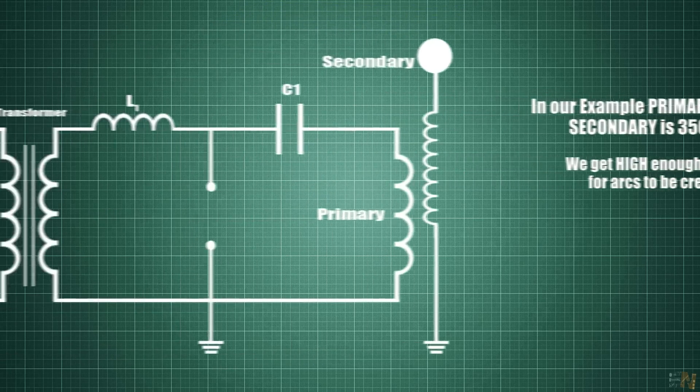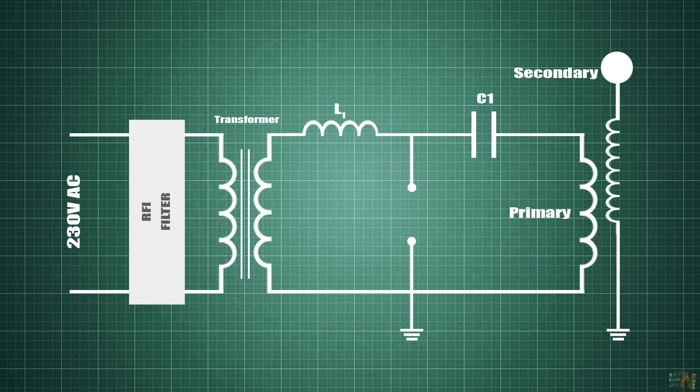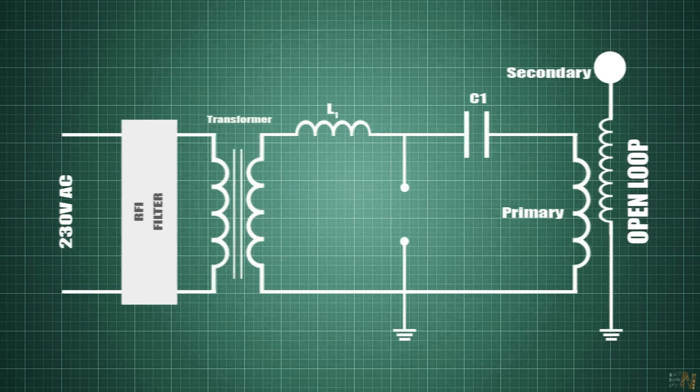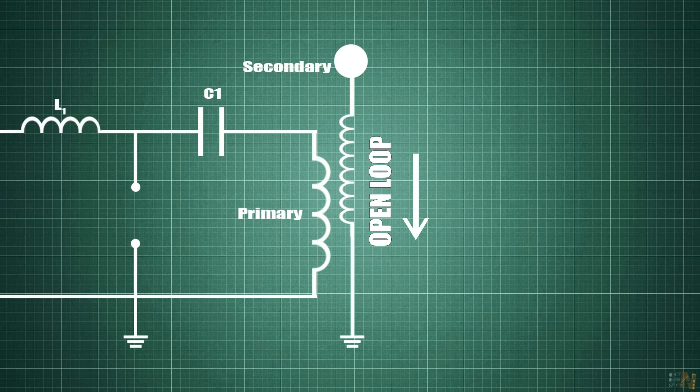But now you might wonder, how is the voltage arc created, because this is an open loop. I mean we have high voltage on the top of the coil, but there is no connection to the opposite side so the spark could jump.